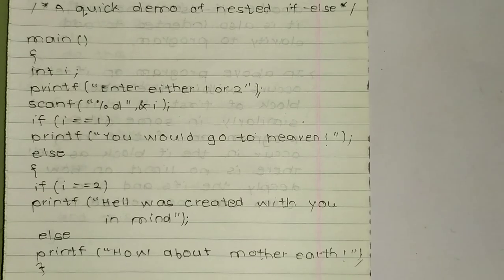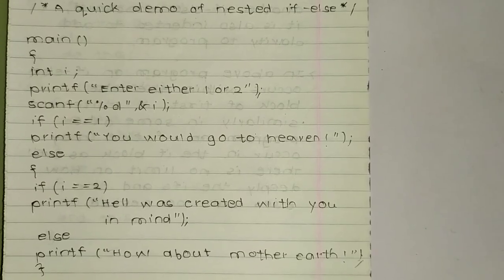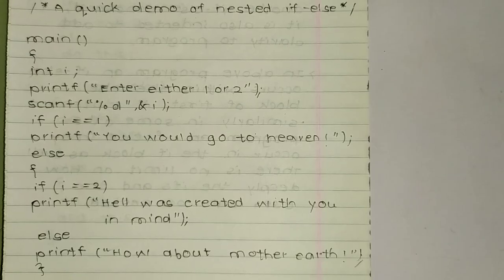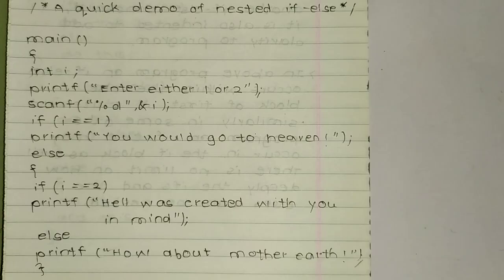This program is a demo of nested if-else. We start with main(), which is the compulsory function, followed by an opening bracket. We declare int i, meaning i is an integer. The printf statement prompts the user: 'Enter either one or two', telling the user to enter value 1 or 2.